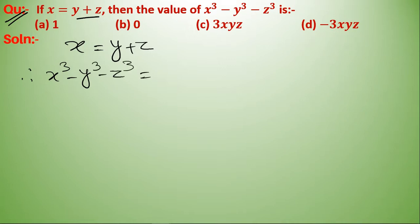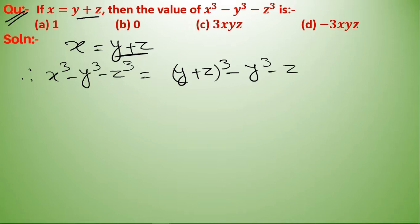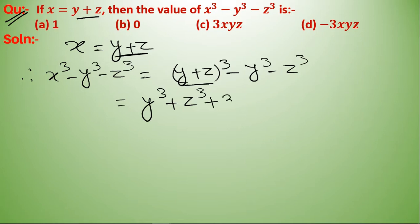We put the value of x, so we get (y plus z) whole cubed minus y cubed minus z cubed. Now we use the identity: (y plus z) cubed equals y cubed plus z cubed plus 3yz into (y plus z).